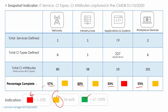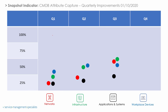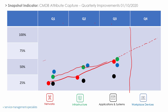Another view I'll put together quickly is basically how we're progressing quarter on quarter — quarter one, two, three, and four. In this case we haven't actually reached quarter four yet. As an example, the networks domain is actually progressing quite nicely from quarter to quarter, showing good progress. If updating and keeping your CMDB accurate is a KPI, this is a really good indicator to show your progress. The same here for infrastructure — also showing good progress in terms of capturing attributes quarter on quarter.